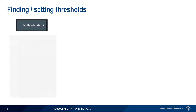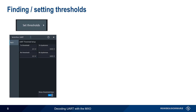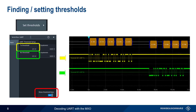Now that we've verified that our input channel levels and time base are configured properly, the next step is setting thresholds. These can be thought of as the voltage values that divide a logical 0 from a logical 1. Here the thresholds for TX and RX are both set to 2.5 volts. If we enable 'show threshold lines,' we can see that, in this example, these are appropriate voltage thresholds, since the configured threshold values fall almost directly between the high and low states of our input signals.